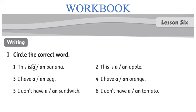Have you finished? Good job. Let's check the answer. Number 2: This is an apple. Number 3: I have an egg. Number 4: I have an orange. Very good. Number 5: I don't have a sandwich. Good job. Number 6: I don't have a tomato. Very good. Now let's check the answer in your book, please.